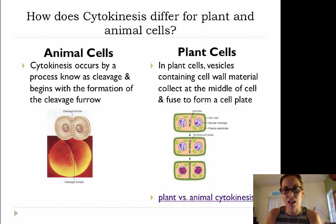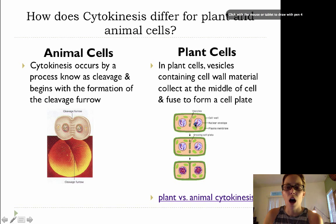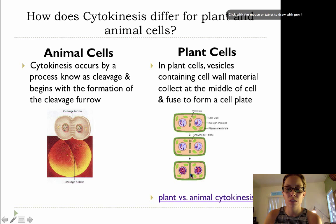Now in plant cells, because we have the cell wall to deal with, we're not going to get a cleavage furrow. Instead, what ends up happening is something pretty cool. We've got these vesicles that contain cell wall material, which is cellulose, and those vesicles are shuttled into the middle of the cell between the two nuclei. Those vesicles keep on forming until ultimately we get something called a cell plate.